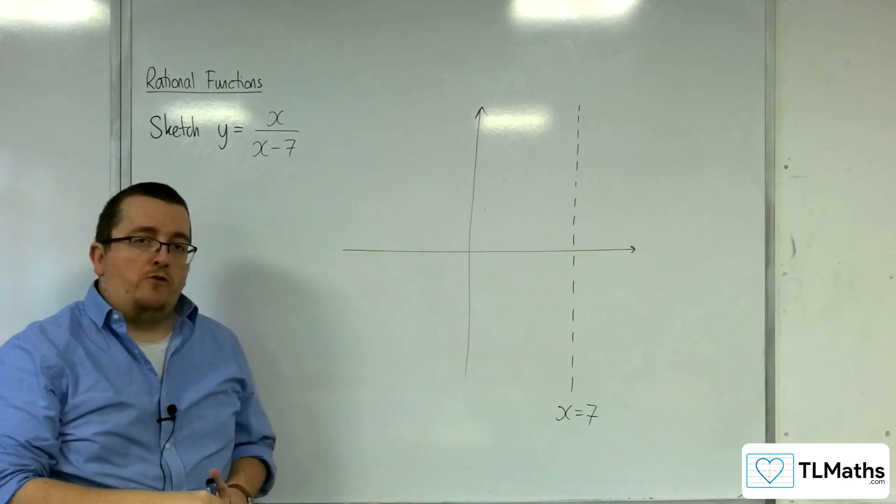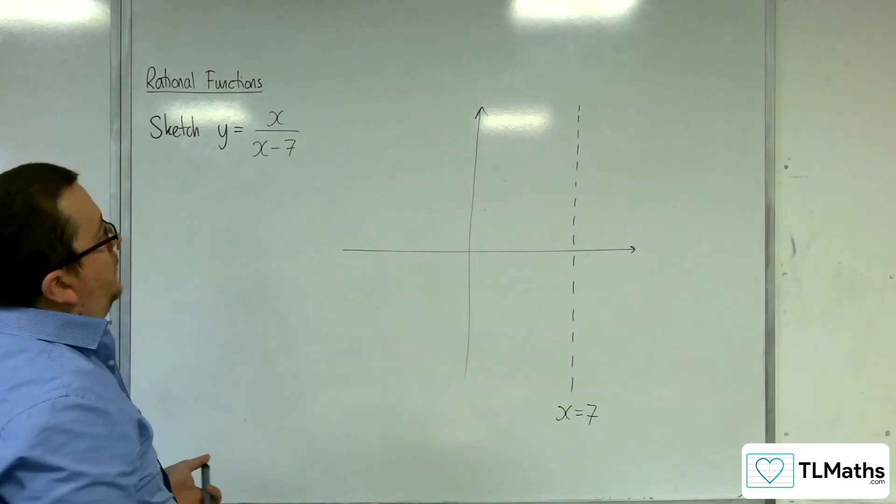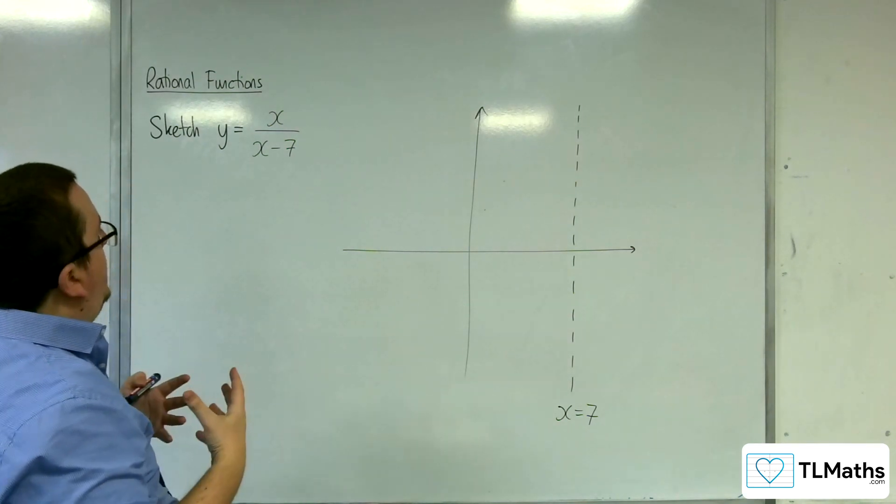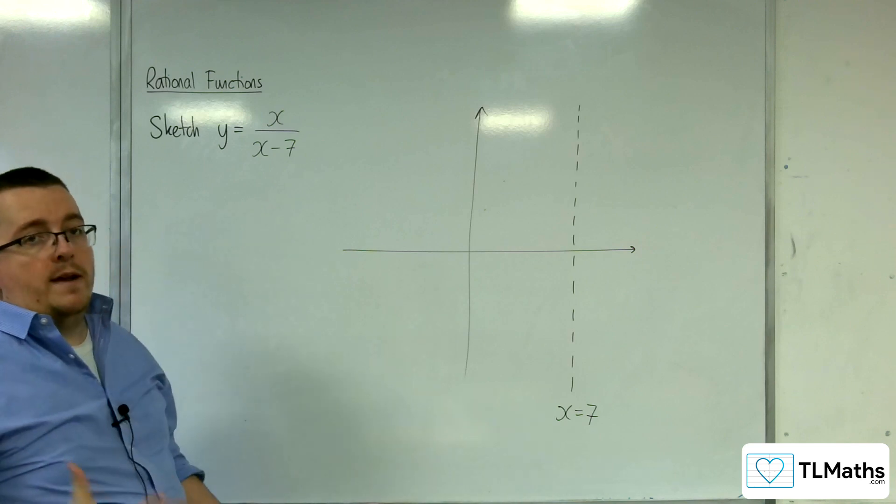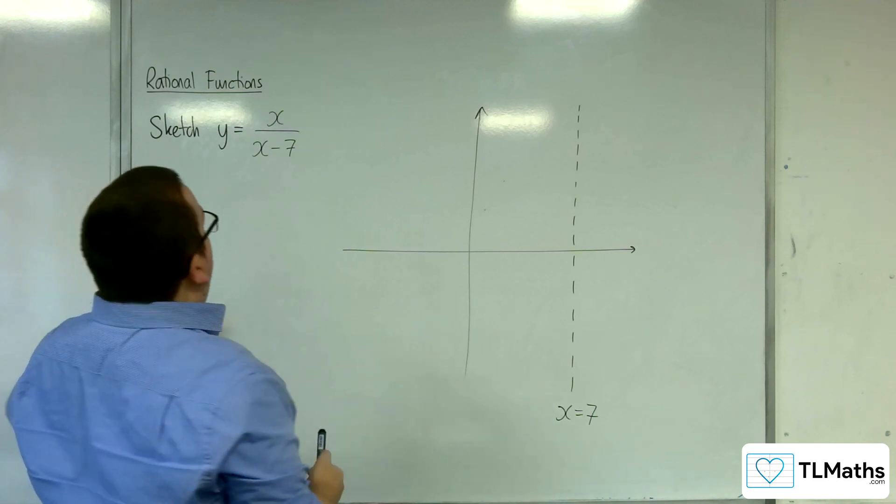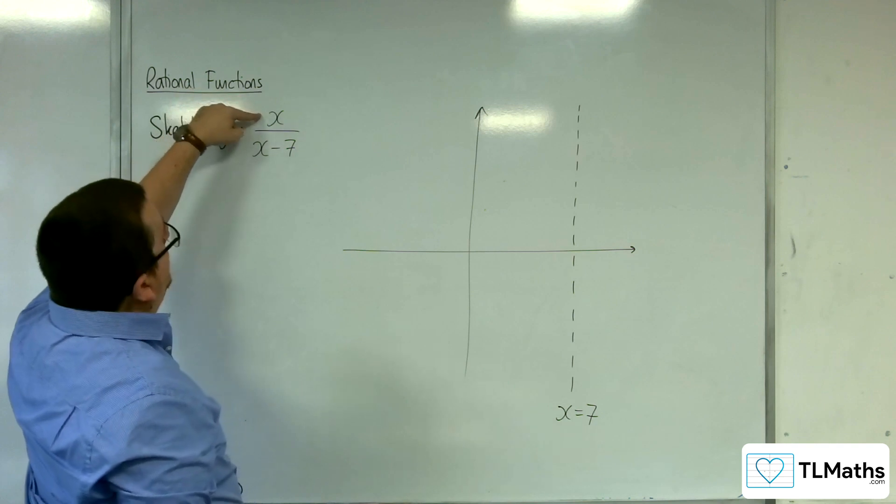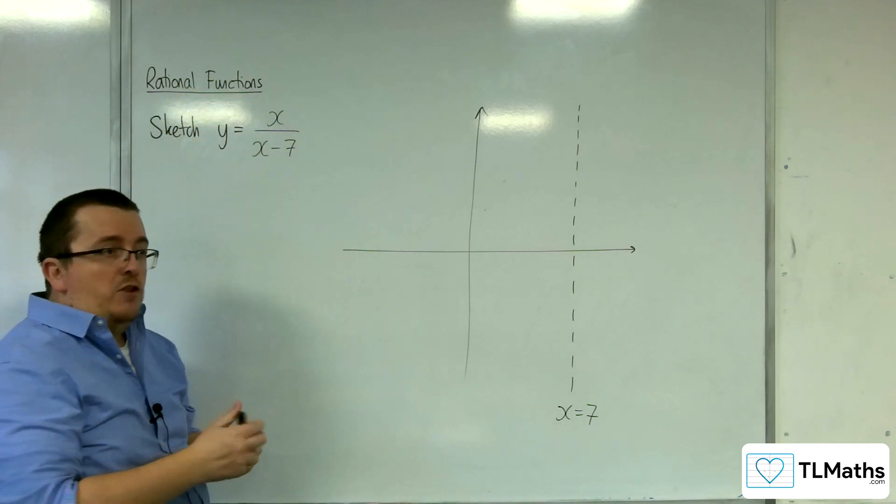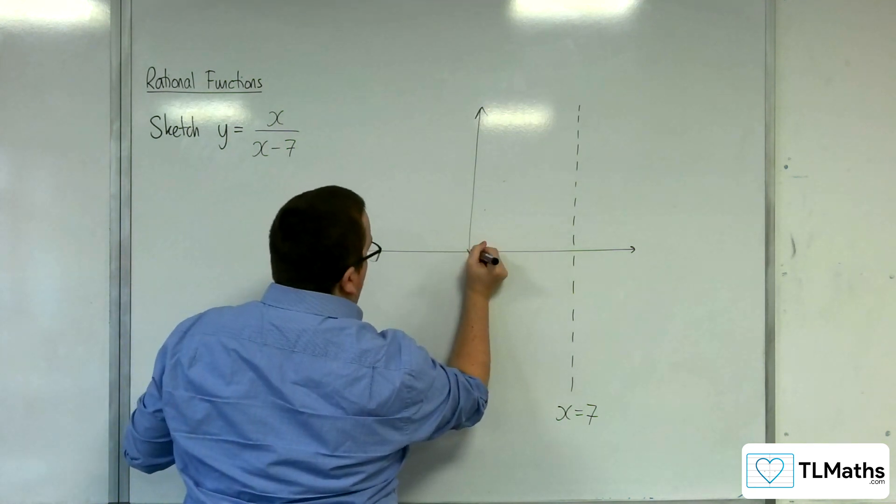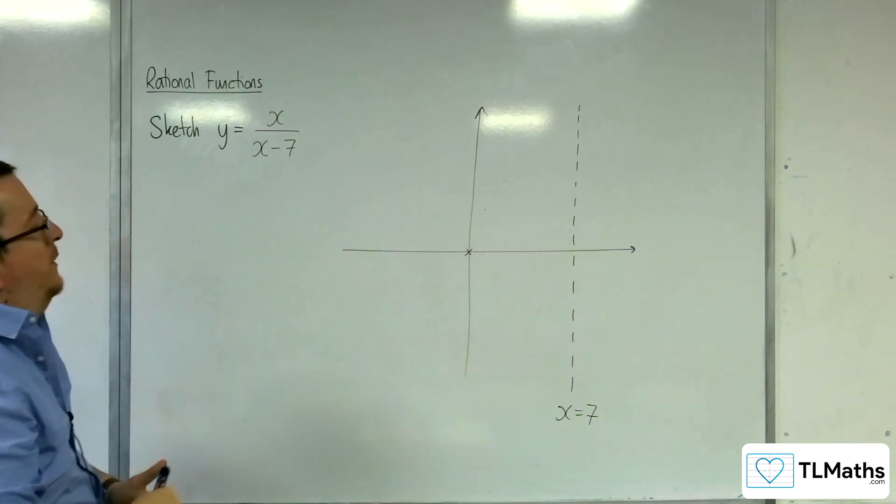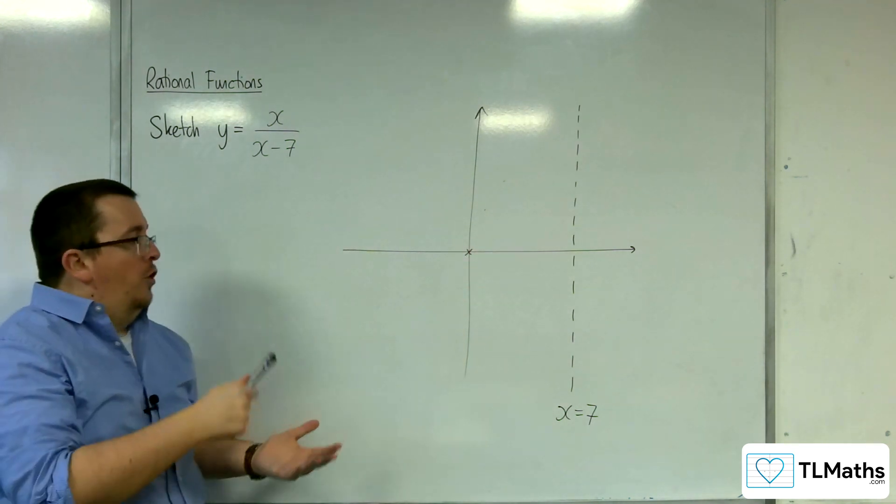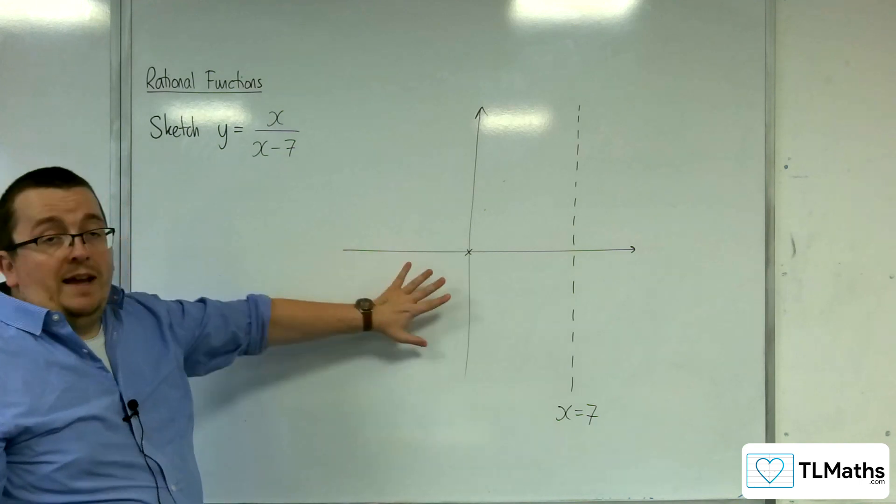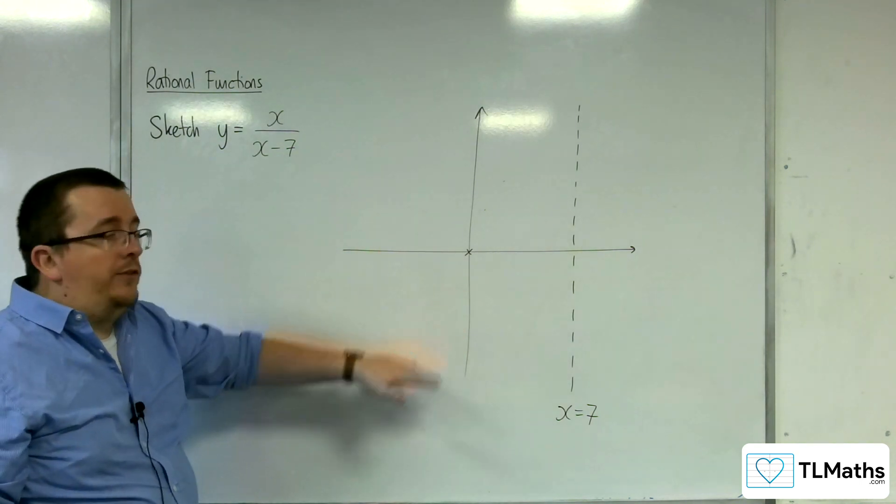Now the next thing to do is to work out where it crosses the coordinate axes. So it's going to cross the x-axis when y is 0. Now the only way that this fraction can be 0 is if the numerator is 0, so that means it's crossing at 0, 0 at the origin. When x is 0, y is 0. So that is not just where it crosses the x-axis, but that's where it crosses the y-axis as well.